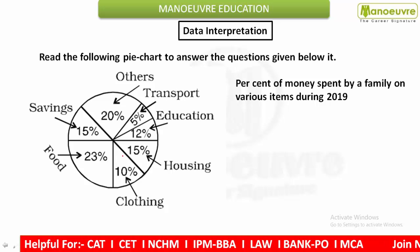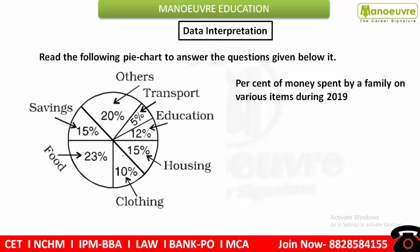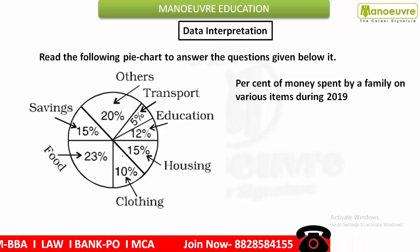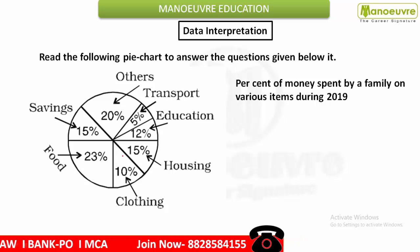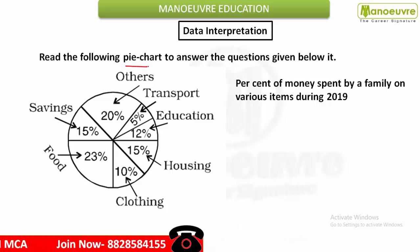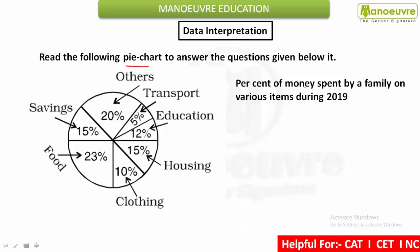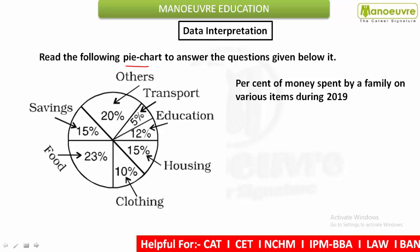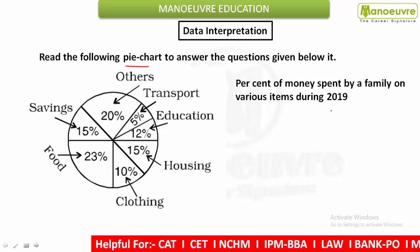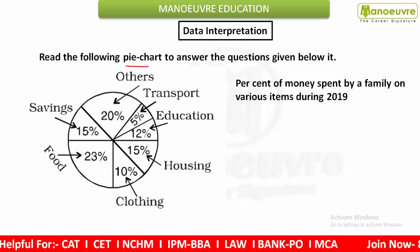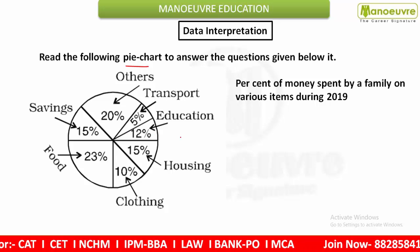Hello everyone, welcome to Maneuver. Today we are going to see a question from data interpretation. This data interpretation is based on a pie chart. It is given that the percent of money spent by a family on various items during 2019 is shown in this pie chart.